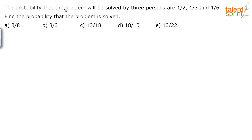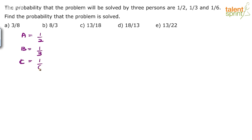The probability that a problem will be solved by 3 persons are 1/2, 1/3, and 1/6. Find the probability that the problem is solved. There is a problem to be solved, and there are 3 persons. Probability that A will solve it is 1/2, probability that B will solve it is 1/3, and probability that C can solve it is 1/6. Find the probability that the problem is solved — all of them are trying it out.